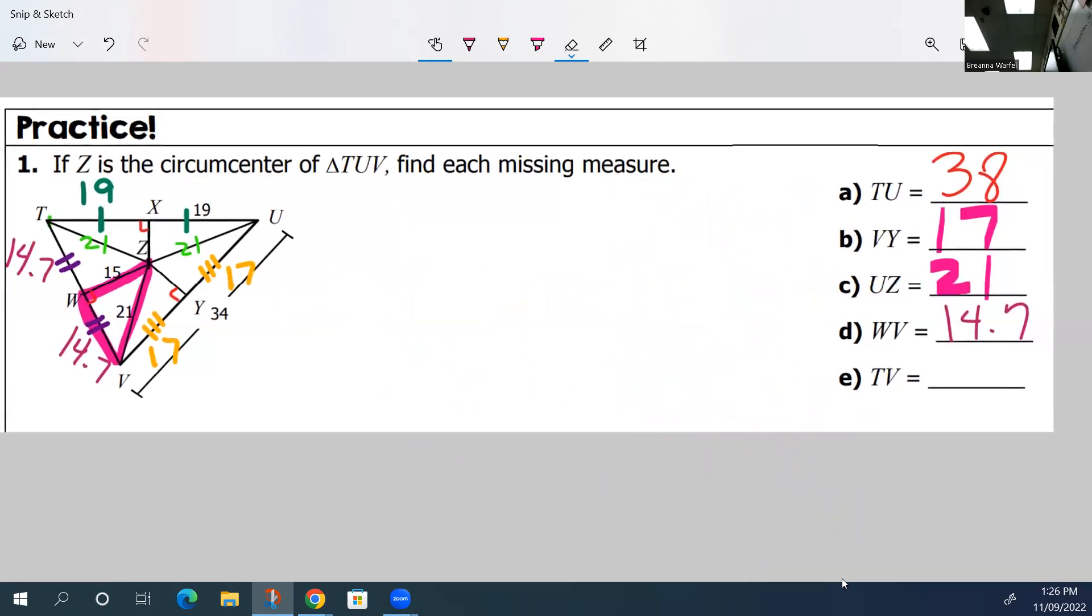And now last but certainly not least, T to V. T to V is going to be this whole side. So 14.7 plus 14.7 is 29.4. So that is how you use all of the properties at the top to solve for your missing pieces.